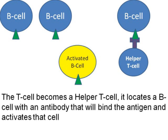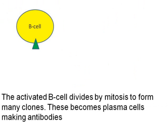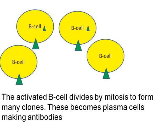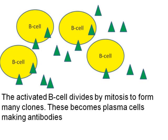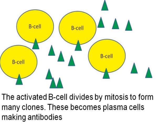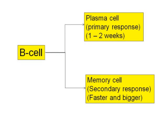That B cell then divides by mitosis to form many many copies of itself, and these become plasma cells. Plasma cells are cells that produce antibodies. A B cell, in response to activation by the T helper cell, will either become a plasma cell — giving a primary response that takes one to two weeks — or it will become a memory cell, stored in the body long-term. If that antigen occurs again, you get an immediate and much larger, faster response: a secondary response.